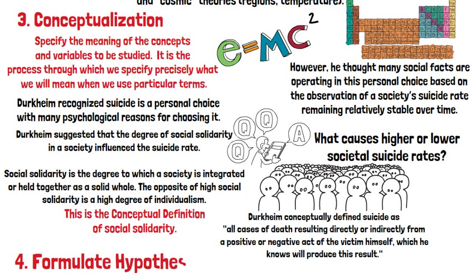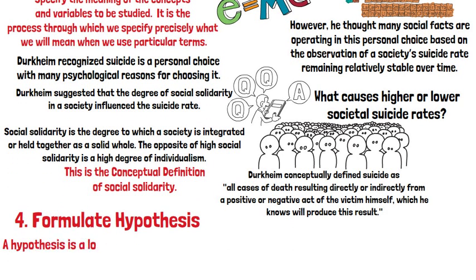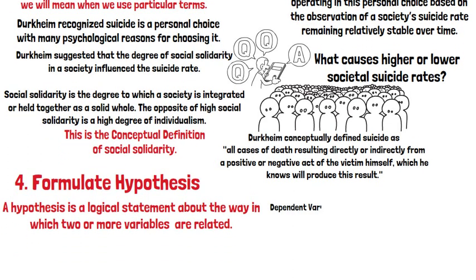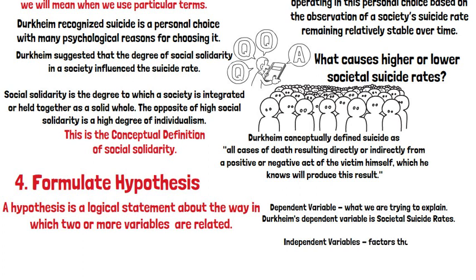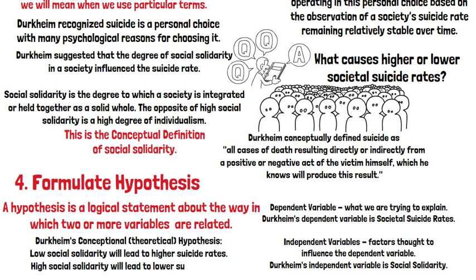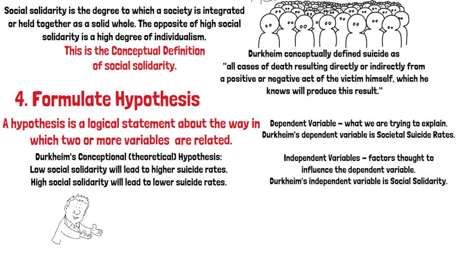Once we have our conceptual definition, we can begin to formulate hypotheses. A hypothesis is a logical statement about the way in which two or more variables are related. In its simplest form, a hypothesis will consist of two types of variables: dependent variables and independent variables. A dependent variable is what we are trying to explain. Durkheim's dependent variable is societal suicide rates. An independent variable is a factor thought to influence the dependent variable. Durkheim's independent variable is social solidarity. His conceptual hypothesis is that low social solidarity will lead to higher suicide rates and high social solidarity will lead to lower suicide rates.